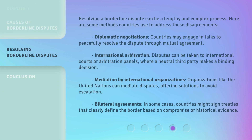Resolving a borderline dispute can be a lengthy and complex process. Here are some methods countries use to address these disagreements. Diplomatic negotiations — countries may engage in talks to peacefully resolve the dispute through mutual agreement. International arbitration — disputes can be taken to international courts or arbitration panels, where a neutral third party makes a binding decision.